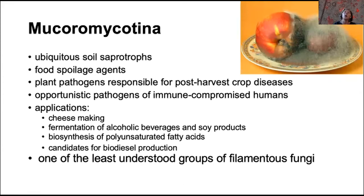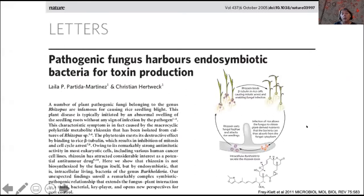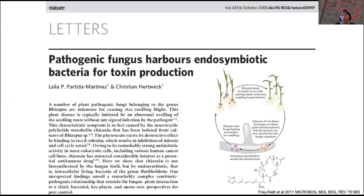We are using bacterial endosymbionts of these fungi as probes to understand their basic biology. We became interested in the rhizopus microsporus–mycetohabitans symbiosis when we read a paper published in 2005 by Christian Hertfeck's group. This paper reported the presence of mycetohabitans — then called Burkholderia — and attributed to this bacterium the ability to produce a toxin, rhizoxin, which is important for pathogenesis of rice in rice seedling blight.